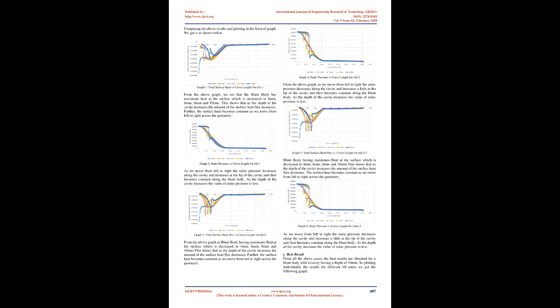After the mesh is generated, the quality of the mesh is checked. The type of mesh generated is a structured mesh. For the body and domain, the mesh is a quad structure. In the case of a cavity, it is a tri-primitive structure. The skewness ratio is 0.4 and the growth rate is 0.0001.